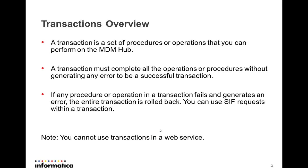So what is a transaction? There are a set of procedures or operations that you want to perform on the MDM hub. It must complete all the operations or procedures without generating any errors to be a successful transaction. For example, you want to perform a PUT request, a GET, then tokenize something, and merge or unmerge — all those operations can be done within a single transaction. There is also an option to roll back if any exception or error occurs, and that is the usage of EJP.